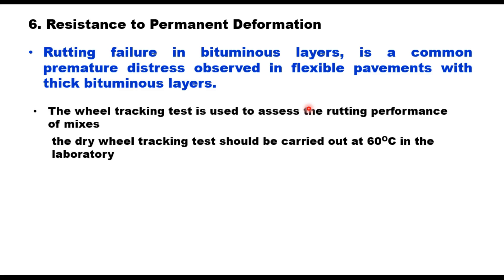The sixth parameter is resistance to permanent deformation — that is, resistance to rutting. Rutting failure in bituminous layers is a common premature distress in flexible pavements with thick bituminous layers. The wheel tracking test is conducted to assess the rutting performance of a mix in the laboratory.